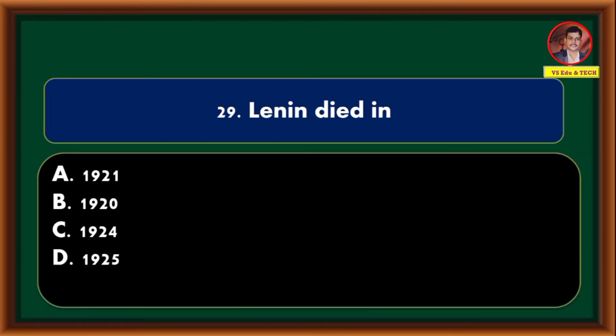Lenin died in — 1921, 1920, 1924, 1925. Correct answer is option C: 1924.